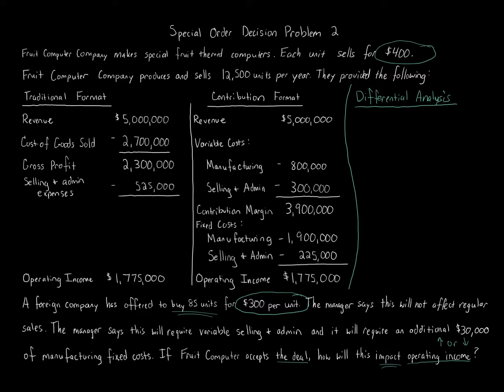Differential analysis is all about the change. We can calculate the traditional totals including the 85 units, but it's faster to just look at the differential. Starting with revenue: we're selling 85 units at $300 each, which equals $25,500 of additional revenue. That is our revenue change.